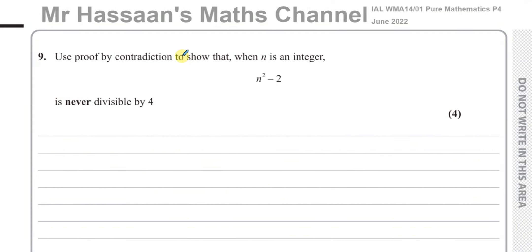Welcome back. This is Mr. Hassan's Math Channel, and this is the final question from the Pure Mathematics P4 International A Level Edexcel exam from June 2022. This is about proof by contradiction, which is one of those new topics not previously present in the old C3-4.